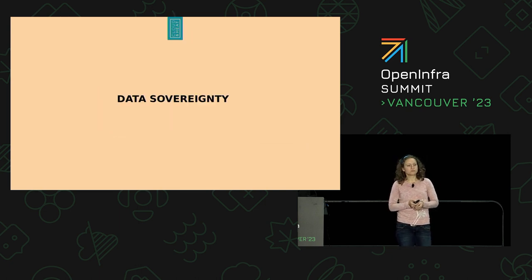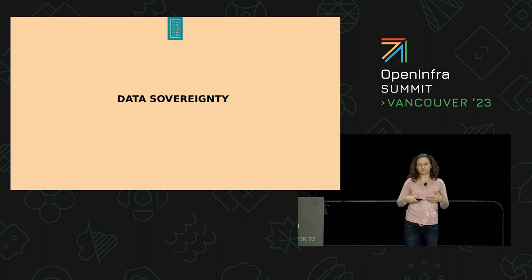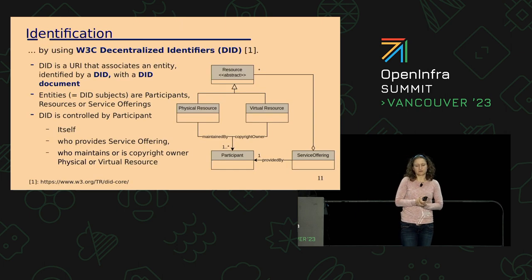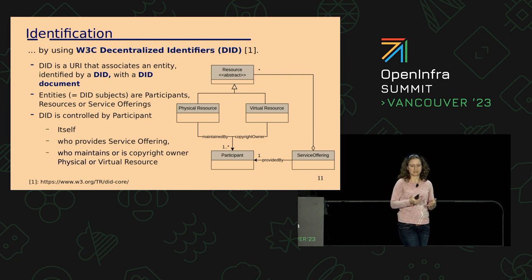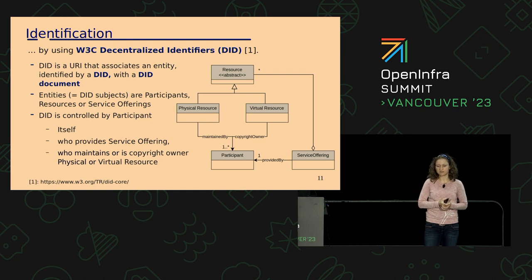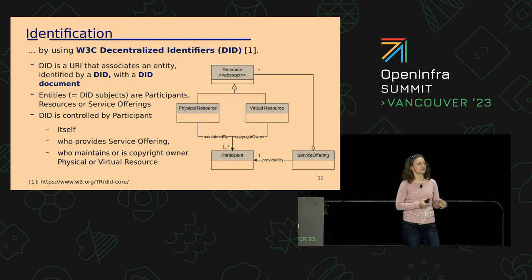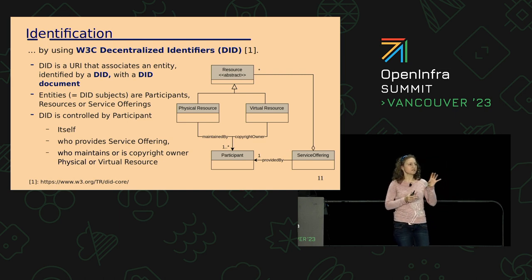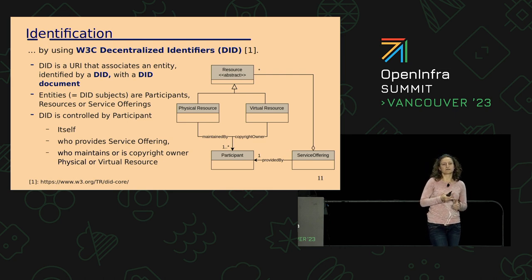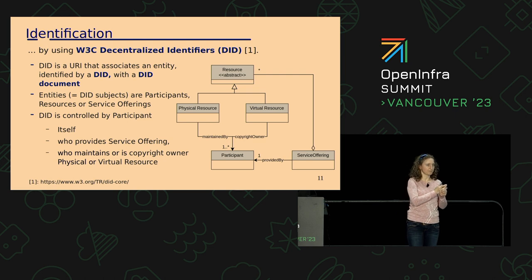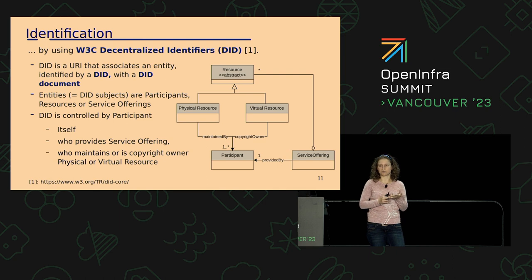How about data sovereignty? How can we use self-description in order to make it easy for consumers to decide which cloud service to choose? In order to look at these concepts, we first have to clarify how we identify subjects or entities in GaiaX. And this is done by W3C Decentralized Identifiers, shortly DIDs. A DID is a URI that identifies an entity — and that entity is in GaiaX: a participant, a resource, or a service offering. The DID also associates a DID document to that entity. The DID is always controlled by someone — the participant — who provides a service offering, maintains the physical resource, or is the copyright owner of a virtual resource.